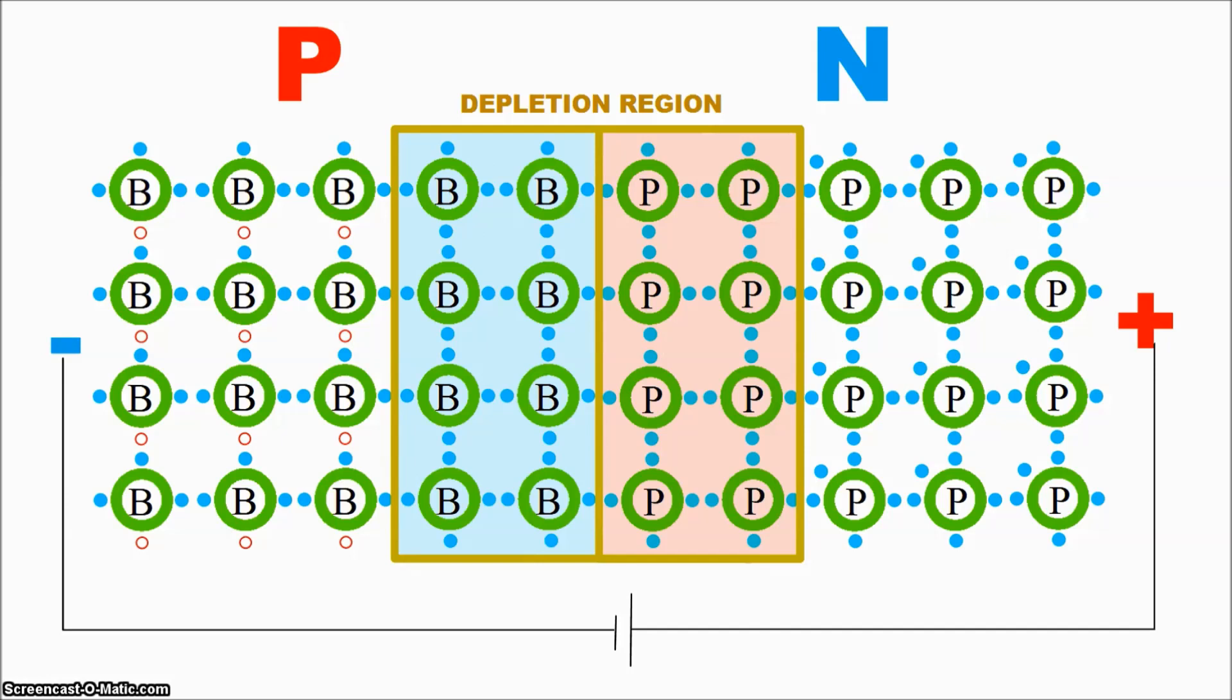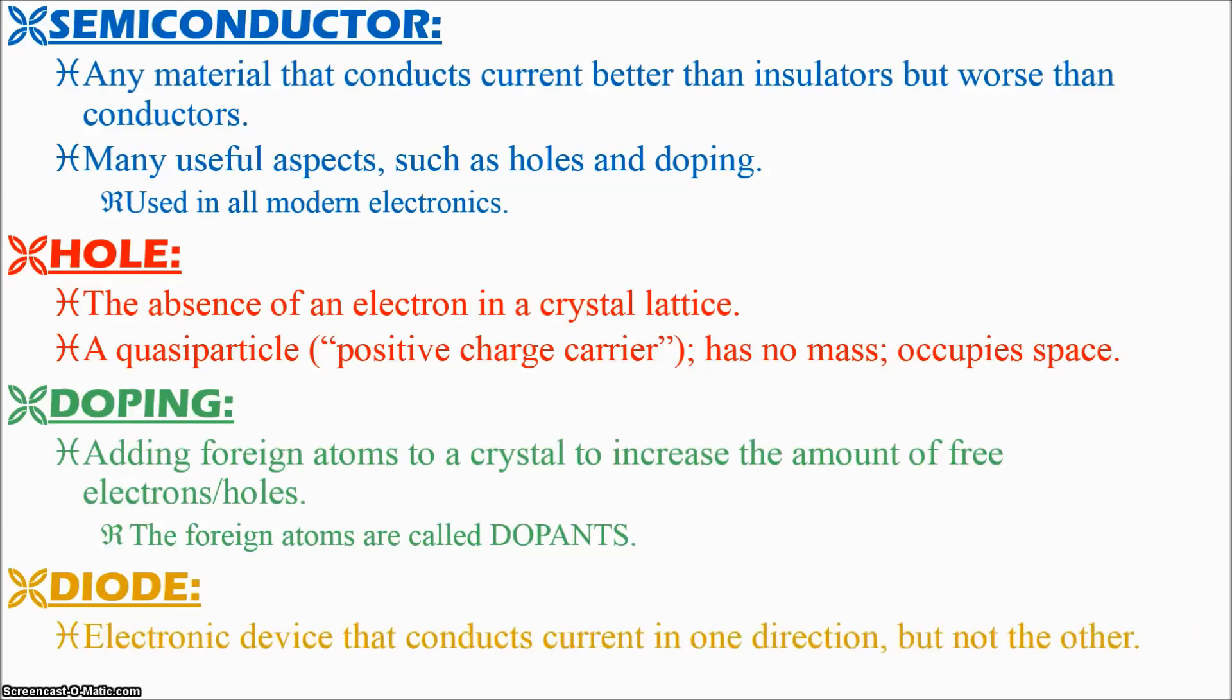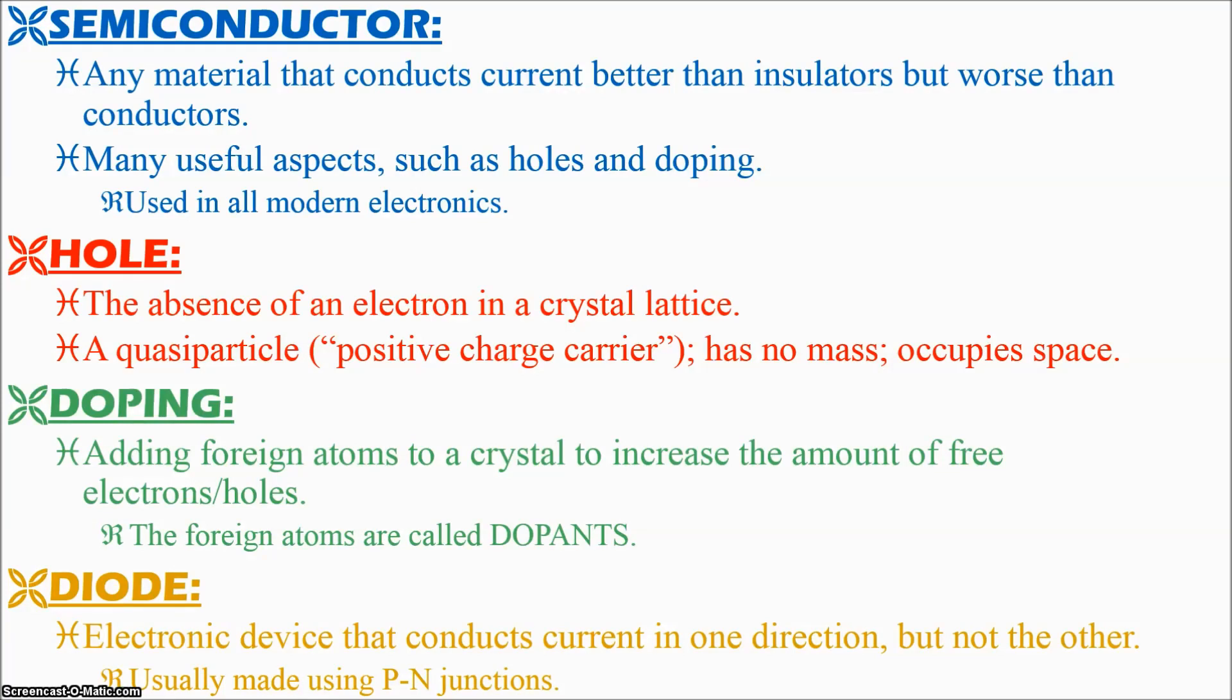The p-n junction is also a key element of logic circuits in all our computers, phones, calculators, digital watches, TVs, you name it. Essentially, the edge of technology is powered by semiconductors, holes, doping, and p-n junction diodes.